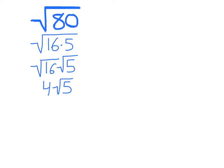Over the past few days, we've been simplifying radicals. In this case, our radicand is 80, so we want to split it into 16, which is the largest perfect square factor of 80, and the other factor that multiplies to be 80. Split that into separate radicals, and then we pull out 4, because we know that the square root of 16 is 4.